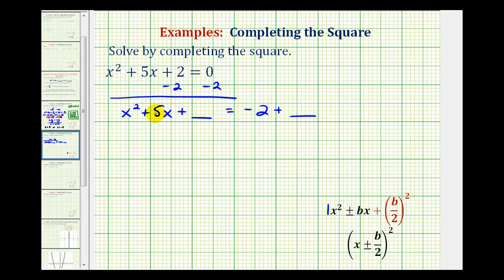b is positive 5, so (b/2)² would be (5/2)², which equals 25/4. We need to add 25/4 on the left as well as on the right.